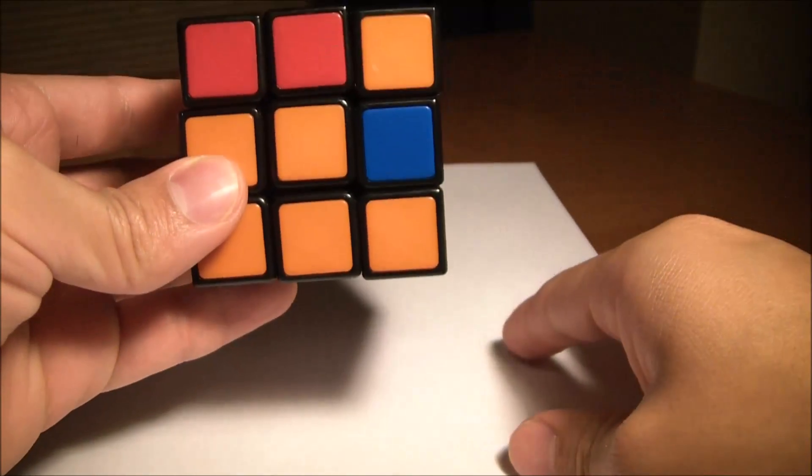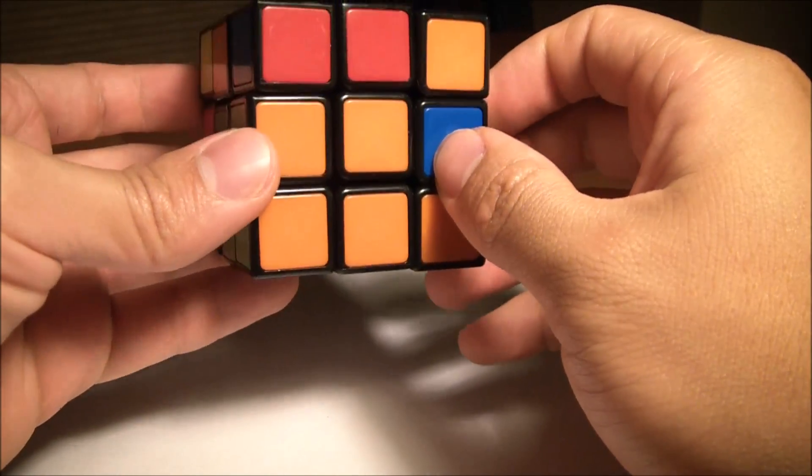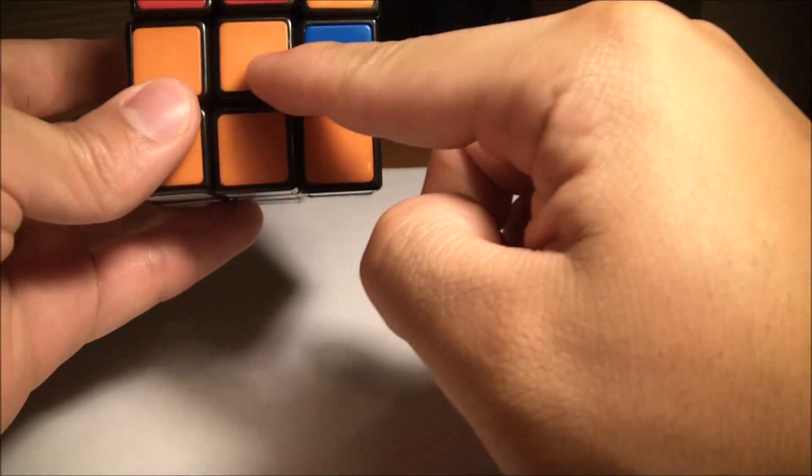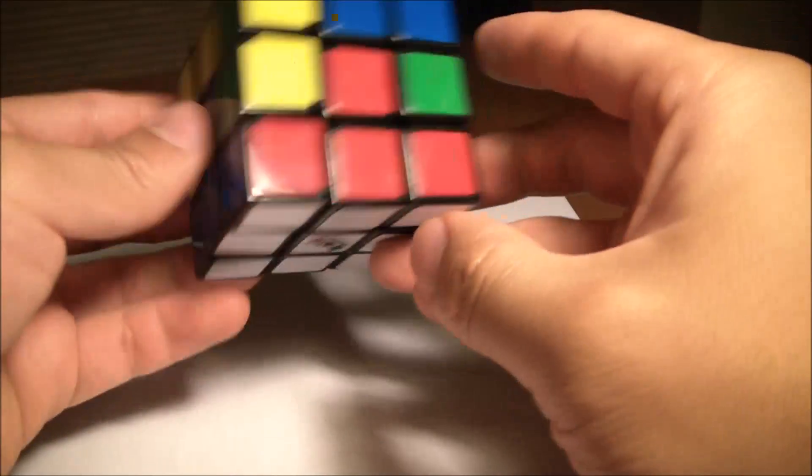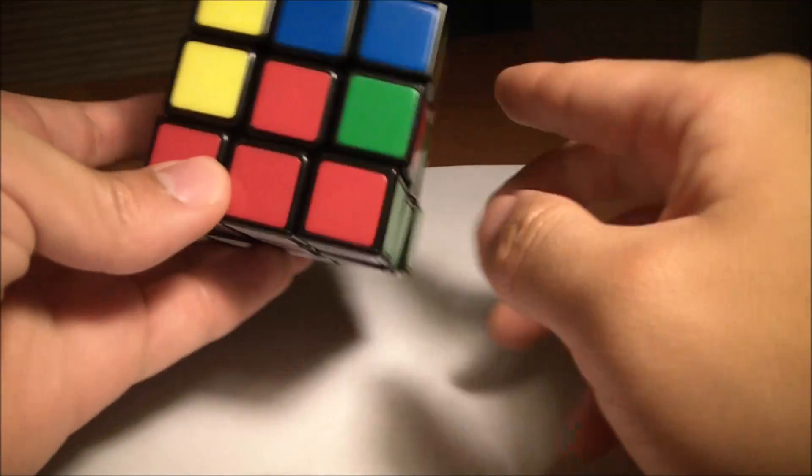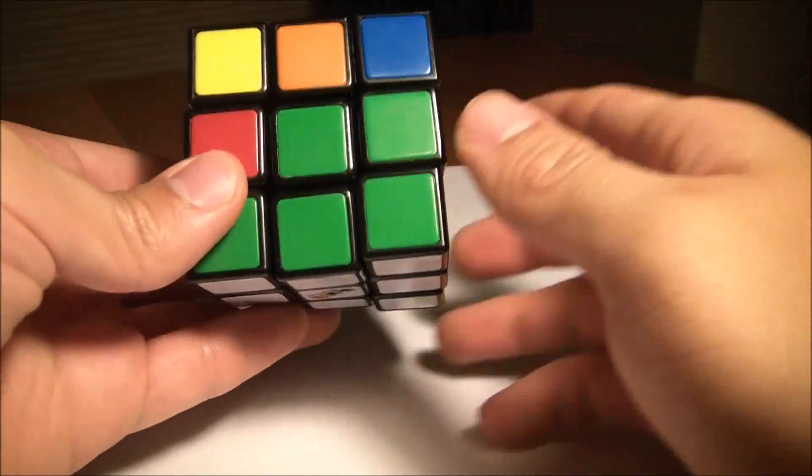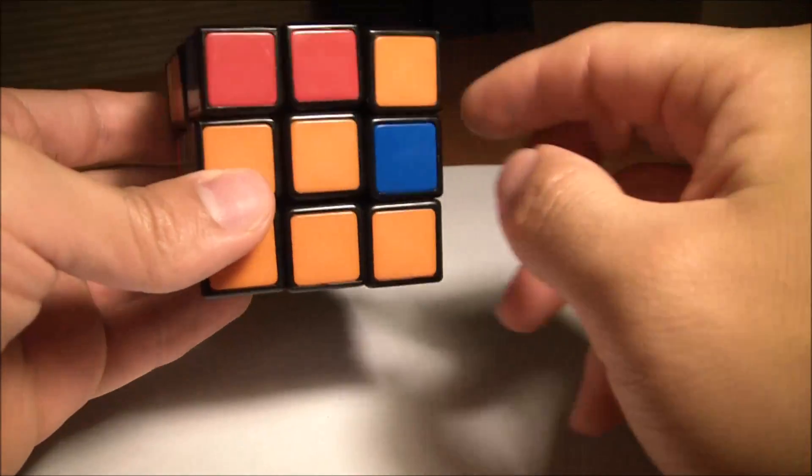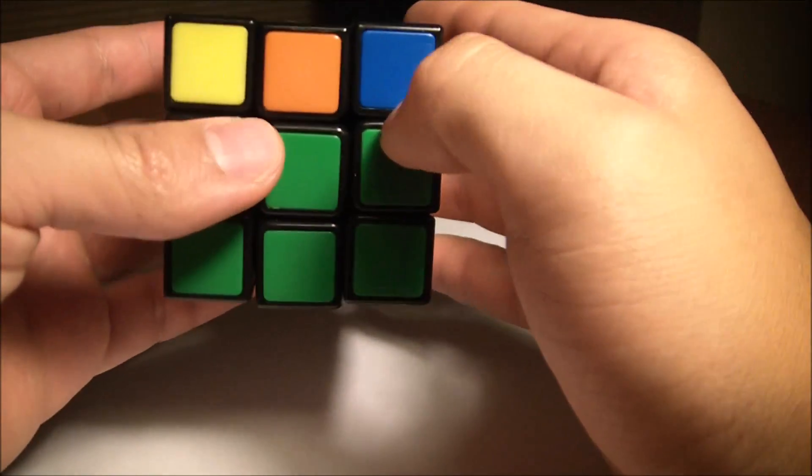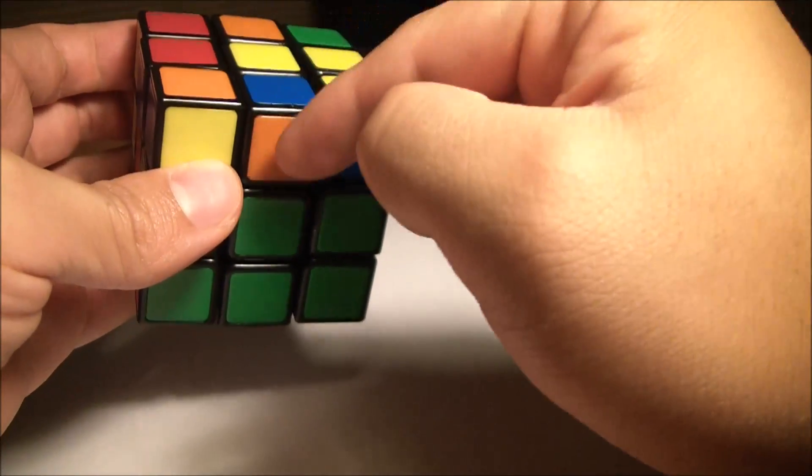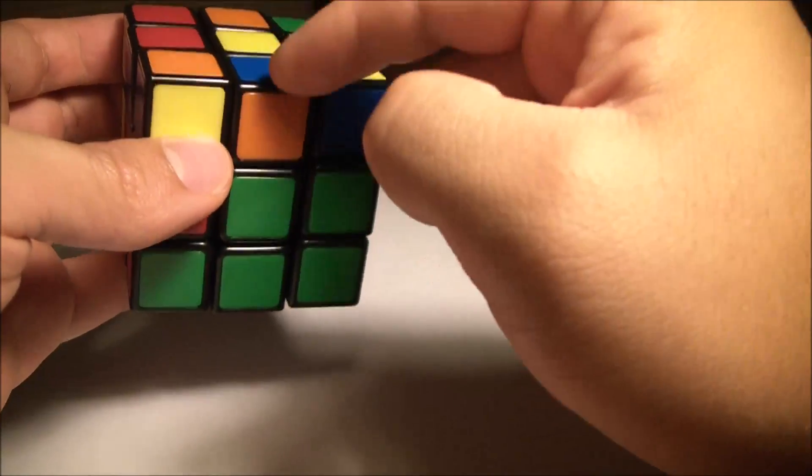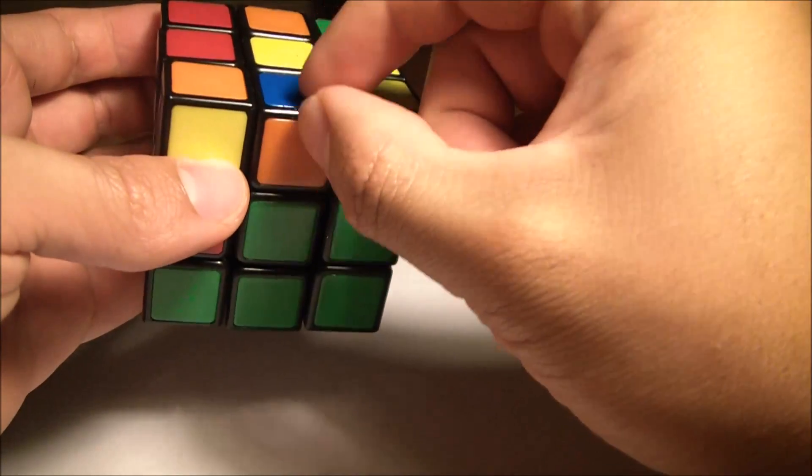In this tutorial, we are trying to create the second layer, otherwise known as the middle layer. So all this should be blue, all this should be red right here, all this should be green, and all this should be orange. To do this, you want to find an edge piece that does not have the color yellow. So this is a good piece to use.